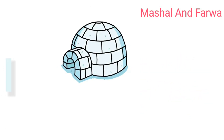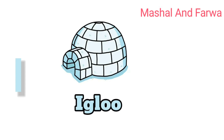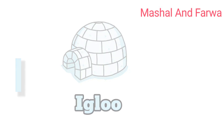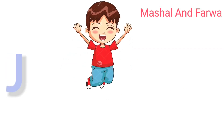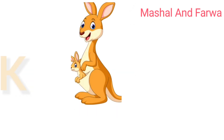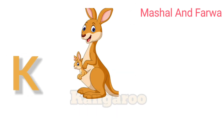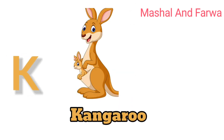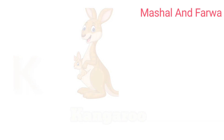I is for igloo, i-i-igloo. J is for jump, j-j-jump. K is for kangaroo, c-c-cangaroo.